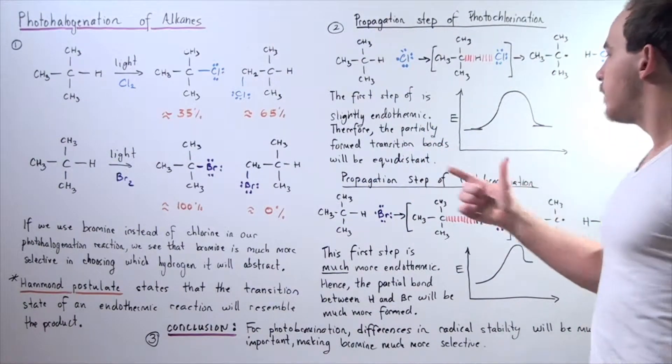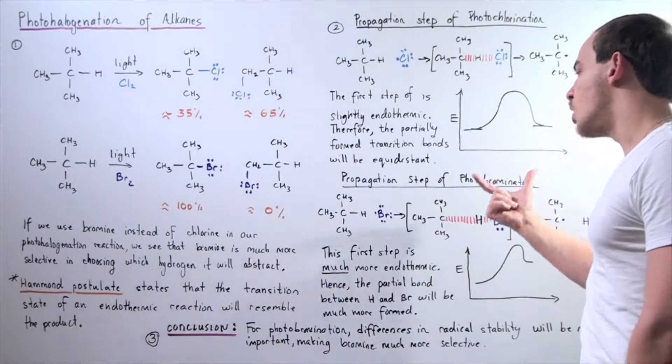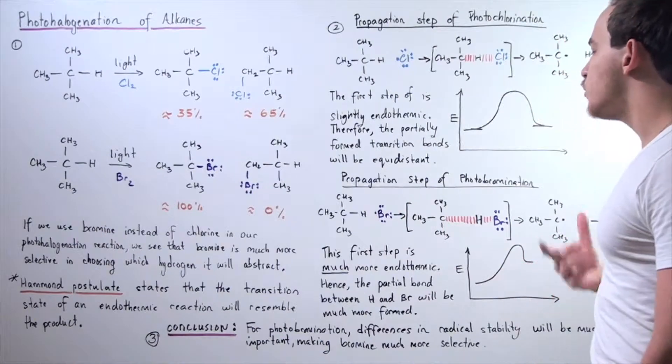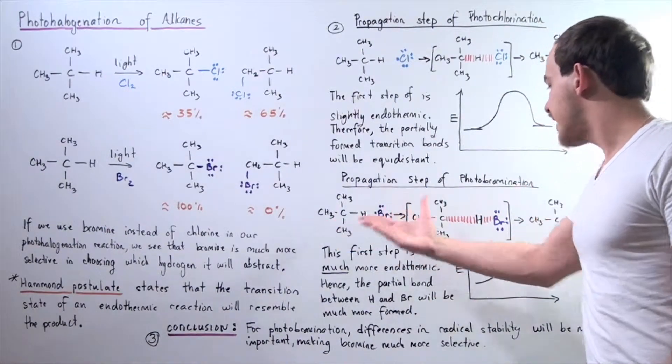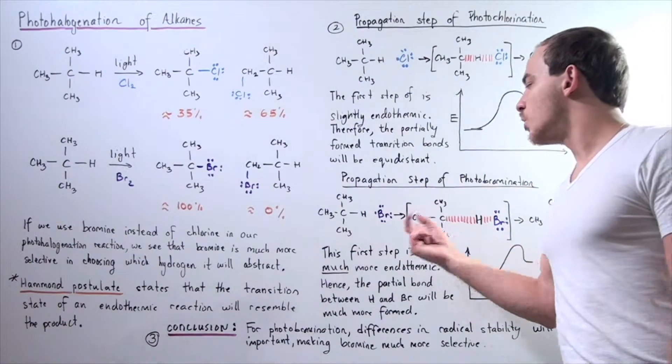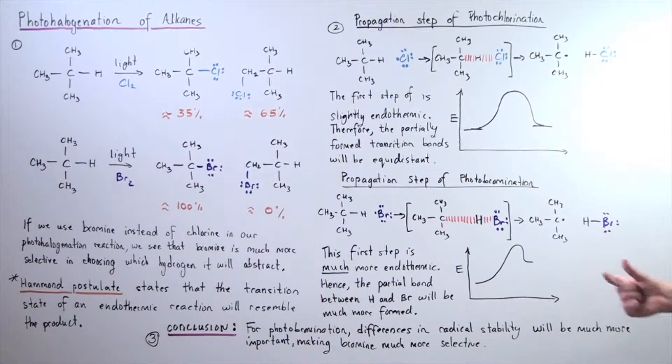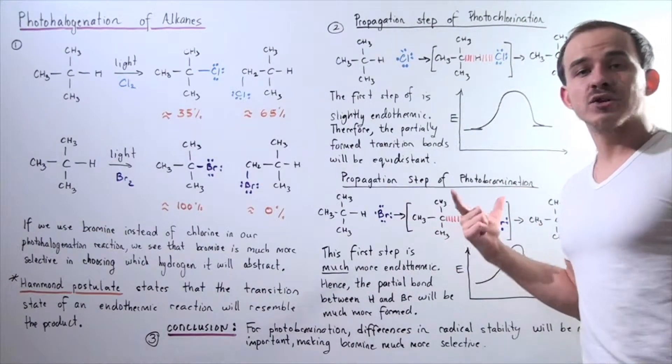Now, let's compare that to the propagation step of photobromination. In photobromination, we have the same type of reaction taking place. This bromine abstracts this H, forming the H-Br bond and this radical. So, the same two radicals, but different hydrogen halides. So, let's examine our transition state.